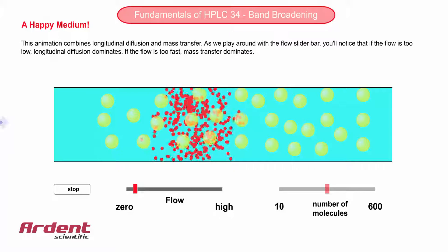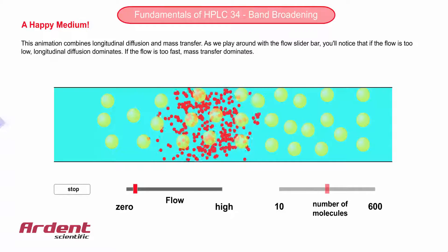If the mobile phase is too fast, then mass transfer causes band broadening.